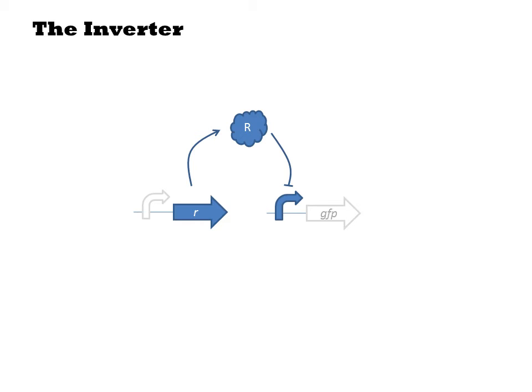In the inverter, we add a single transcriptional repressor. The input promoter drives the R gene, resulting in R protein, which represses some PR promoter controlling the output GFP. Let's consider what this circuit would do under the limiting cases.